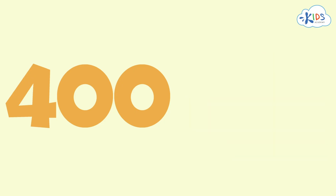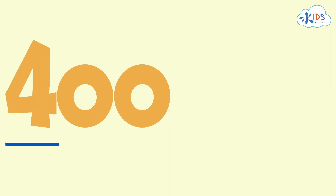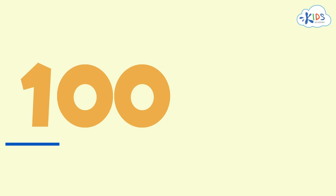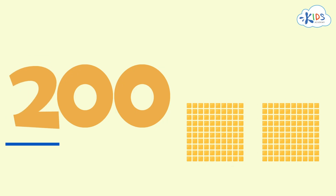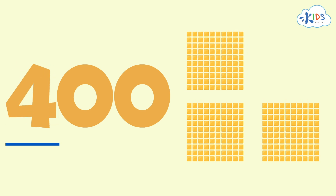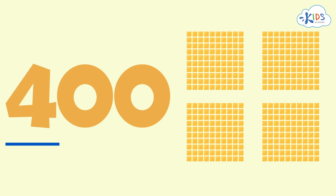Okay, here's the answer. The 4 is in the hundreds place, so it is just worth 400. We can count by hundreds: 100, 200, 300, 400. The ones and tens places have zeros, so there is no value there. The number is 400.